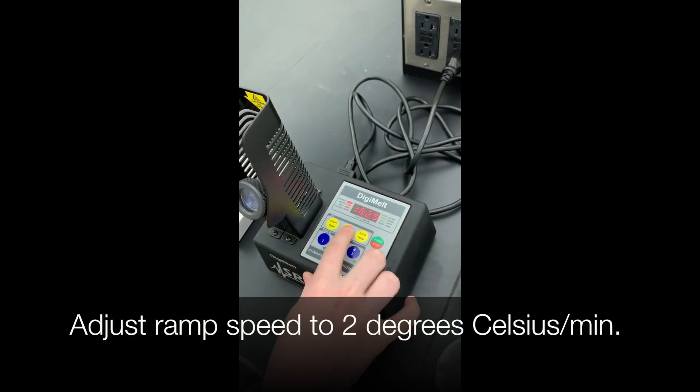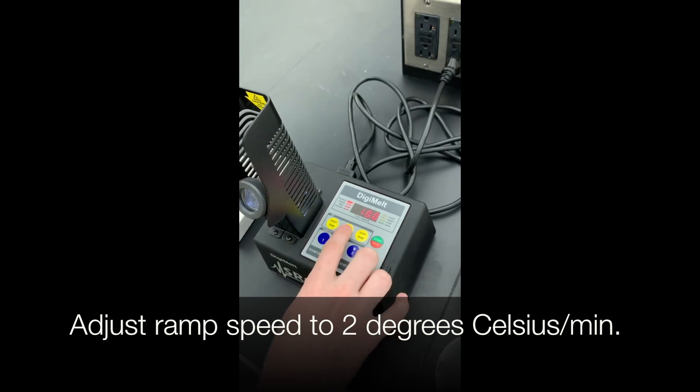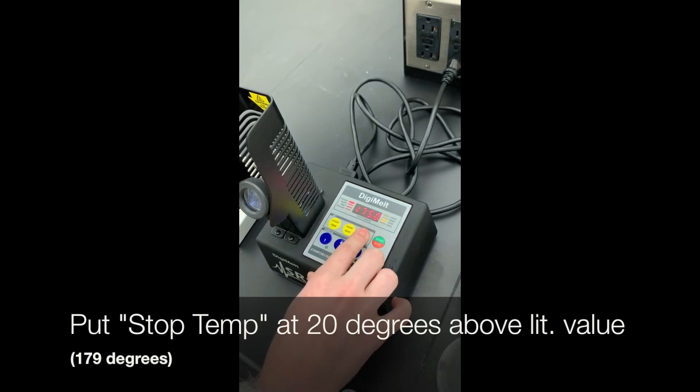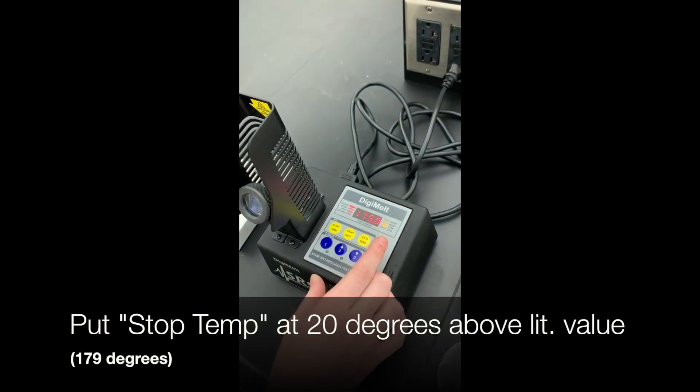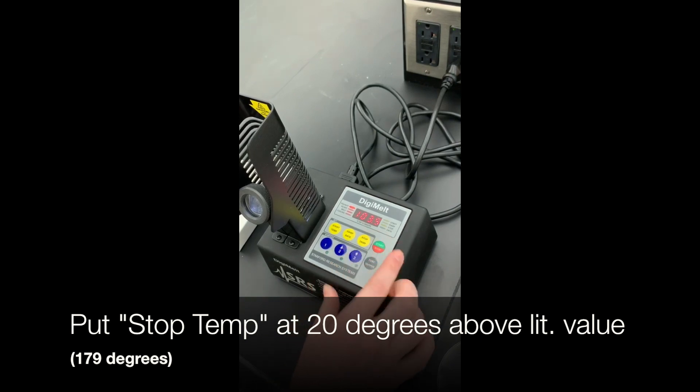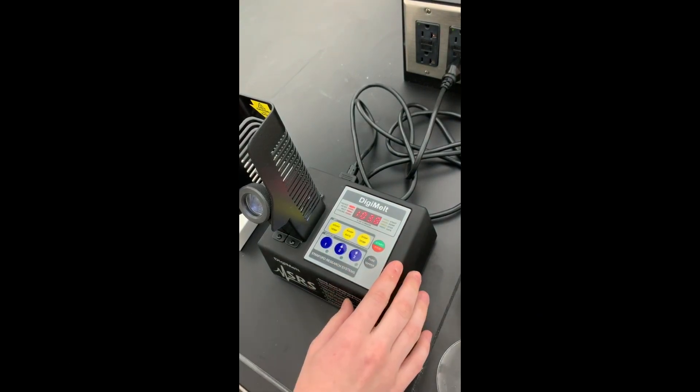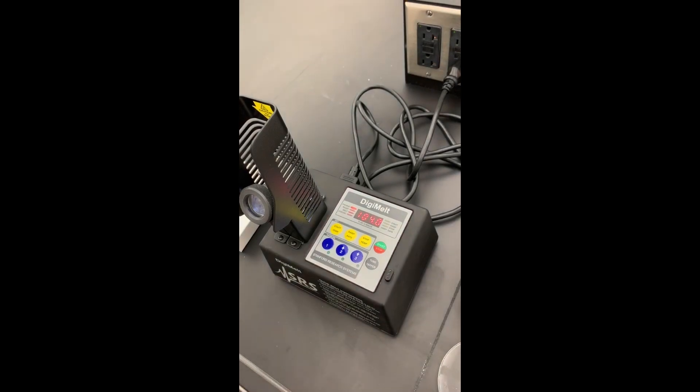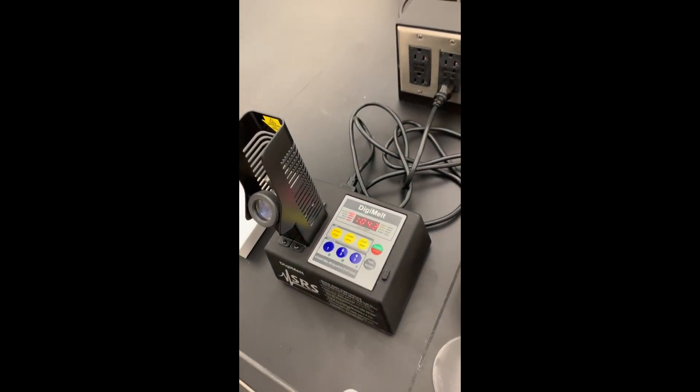To set the ramp rate, press ramp rate and use the arrows to change the degrees per minute to 2 because you don't want it to take all day. Do the same thing to set the stop temp around 20 degrees above the literature value, although you probably won't need it to go this high. Once you've done this, press start again and the apparatus should begin to preheat.